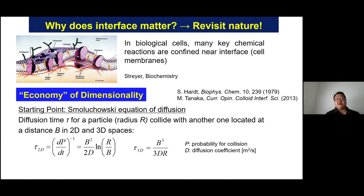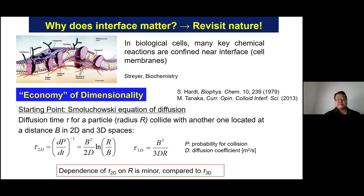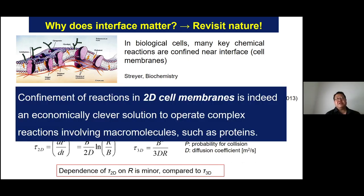This was first shown by Stefan Harte at Weizmann in the late 1970s. The solution shows that diffusion time τ scales differently in 2D and 3D: in 2D, τ scales with the natural log of r, while in 3D it scales with 1/r. This clearly indicates that the dependence of diffusion time on r is much weaker in 2D, explaining why confinement of reactions near the 2D cell membrane is an economically clever solution for running reactions involving biomacromolecules such as proteins and enzymatic complexes.